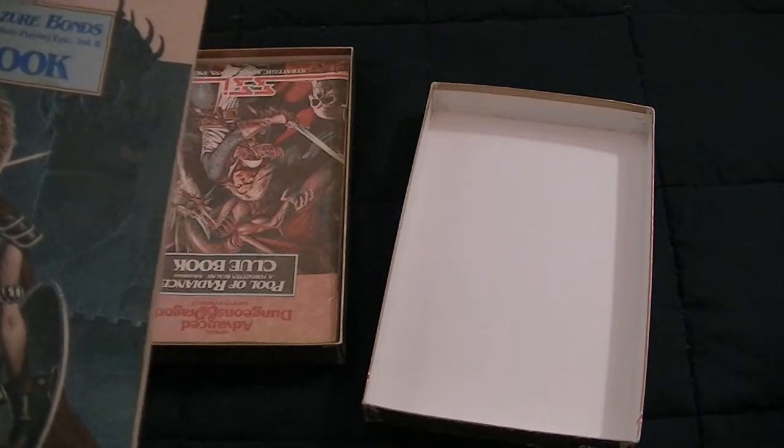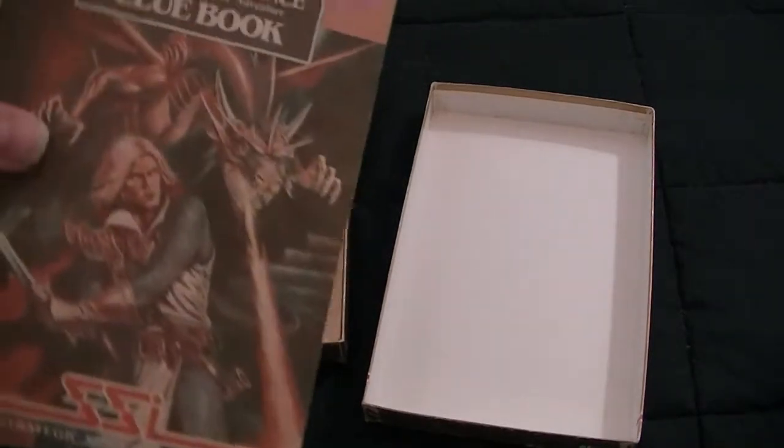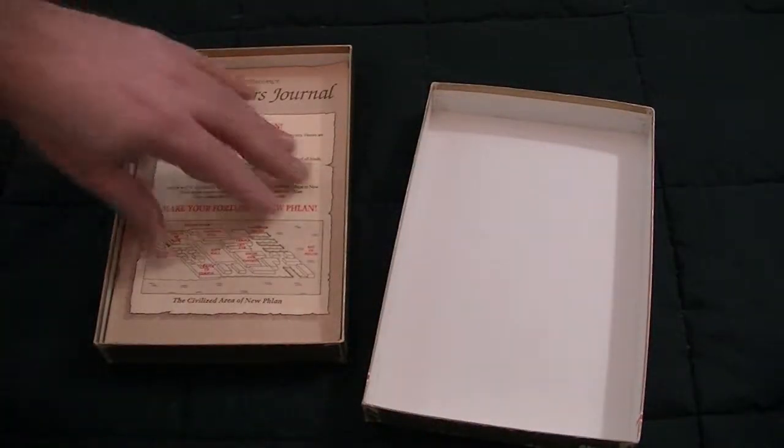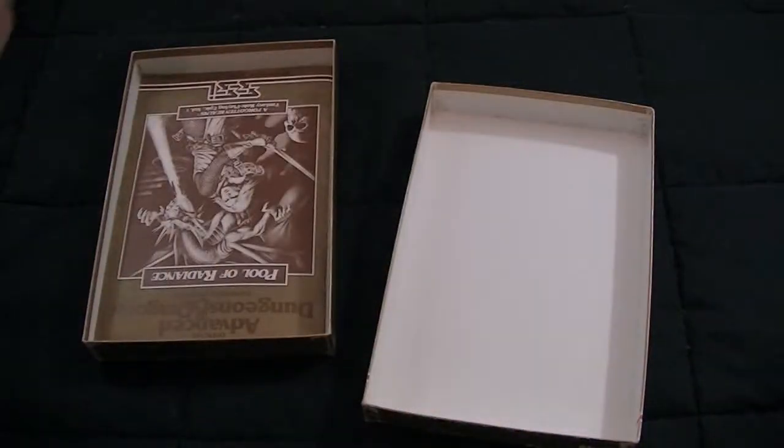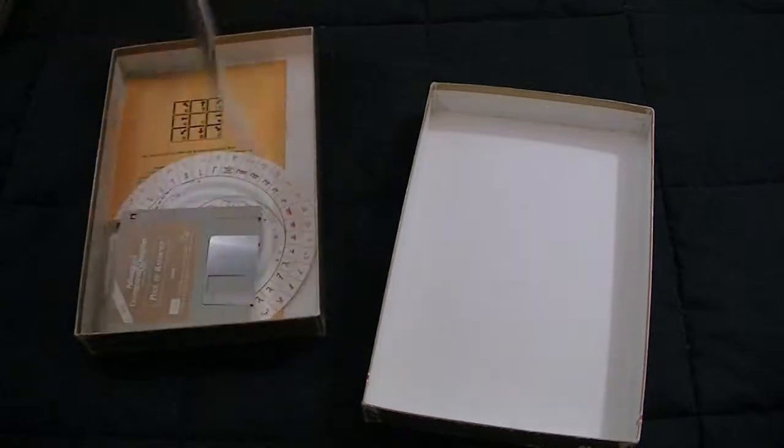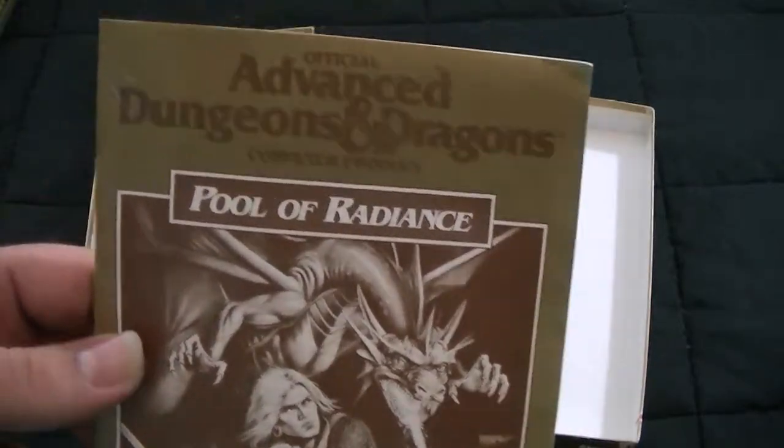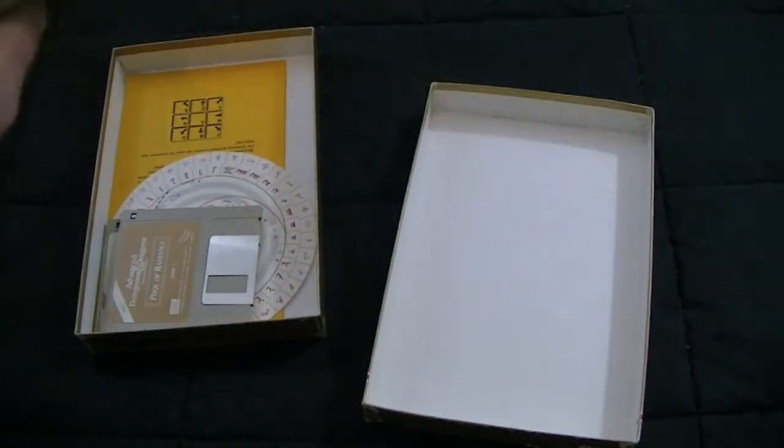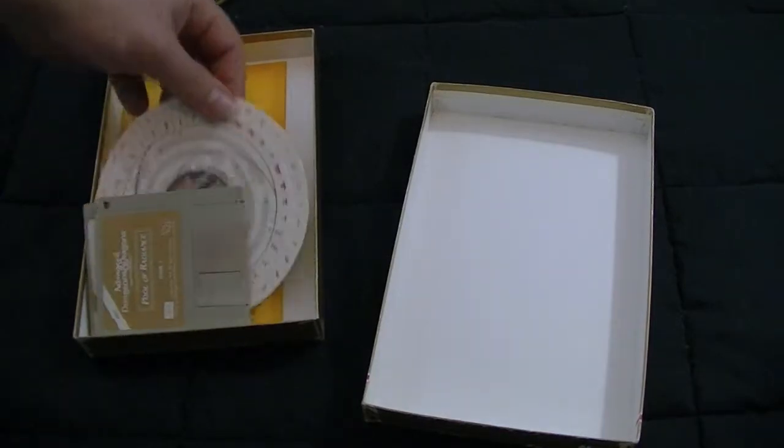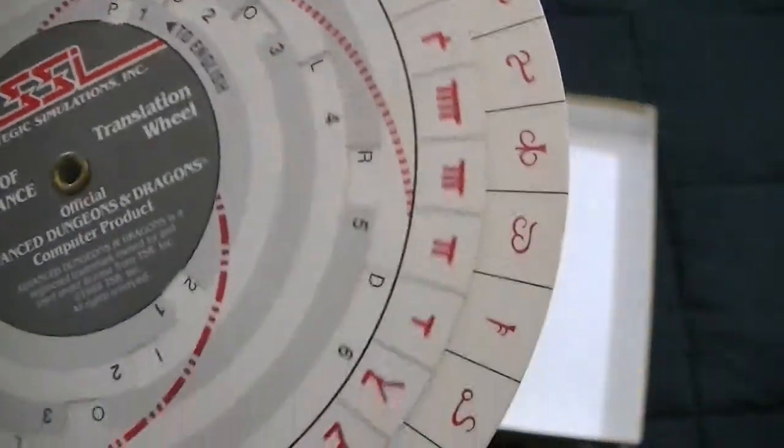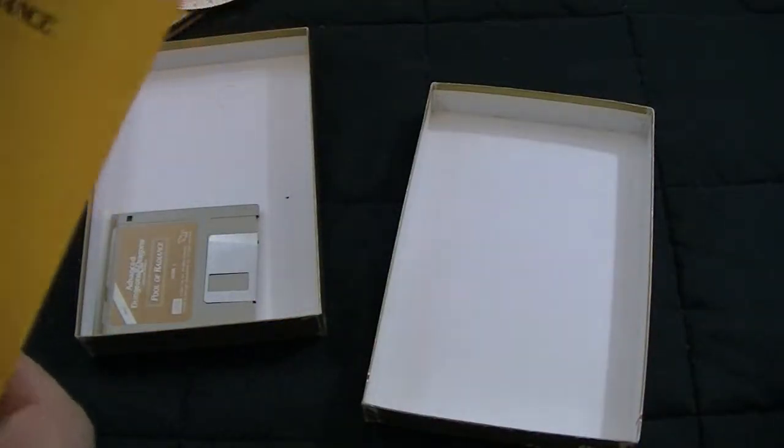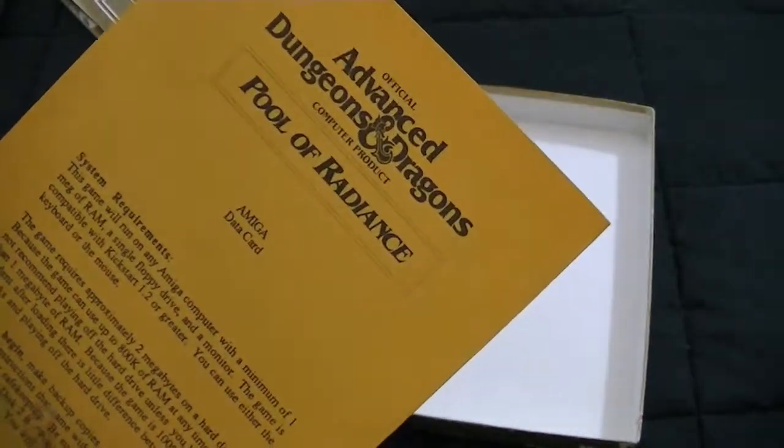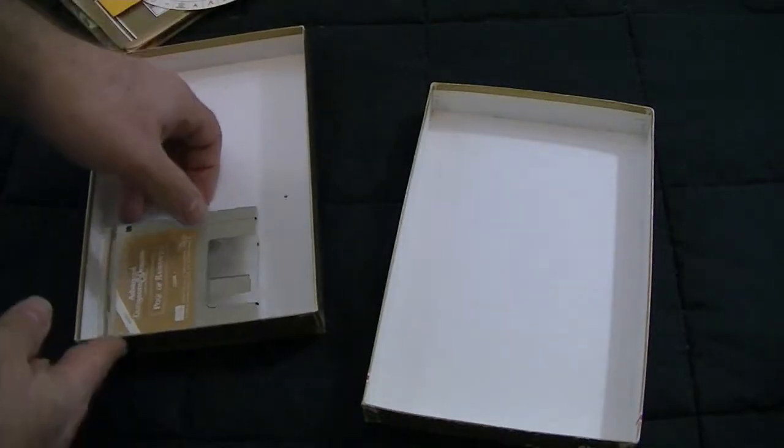We've got the Curse of the Azure Bonds clue book. We've got the Pools of Radiance clue book. We have the Pools of Radiance adventurer's journal. We have the Pools of Radiance product, which I guess are going to be the instructions. We've got another translation wheel. What does it mean? I love translation wheels. If I ever release a game, I'm going to release a translation wheel with it for no reason. A little data card. And of course the game itself. Pool of Radiance. Pool of Radiance.